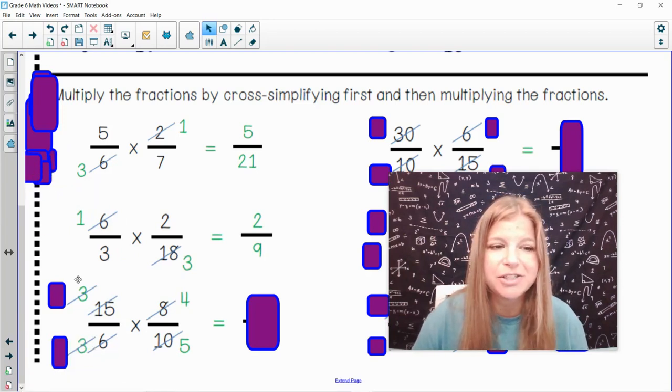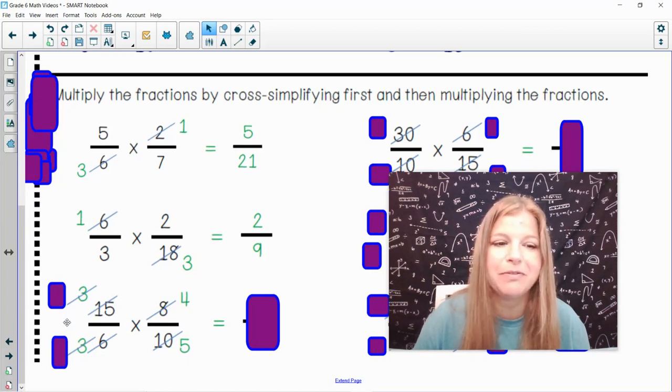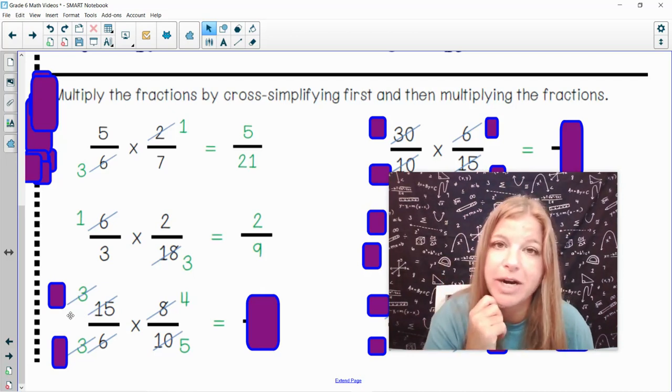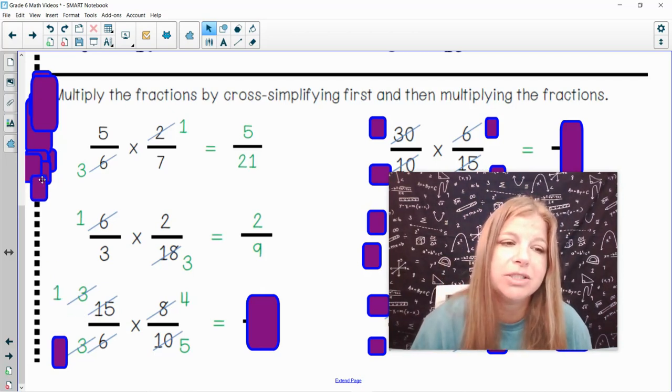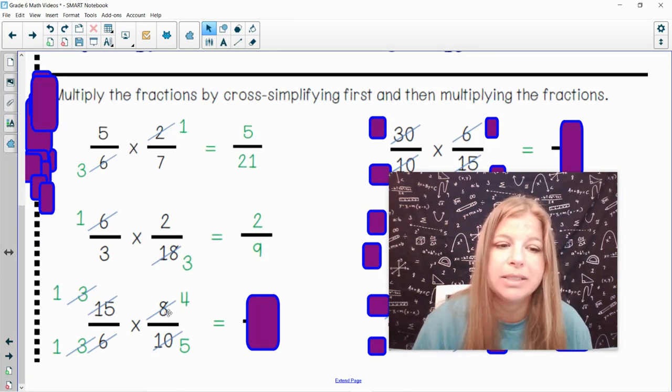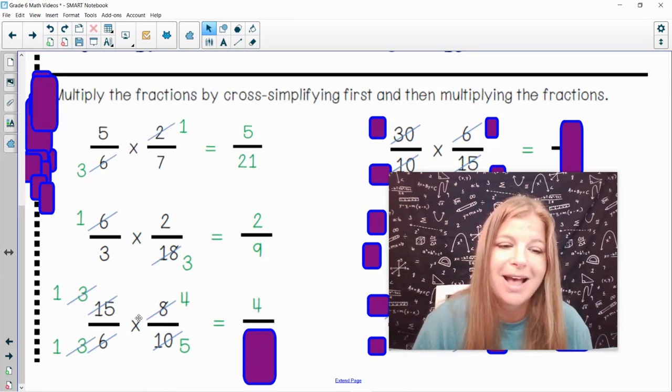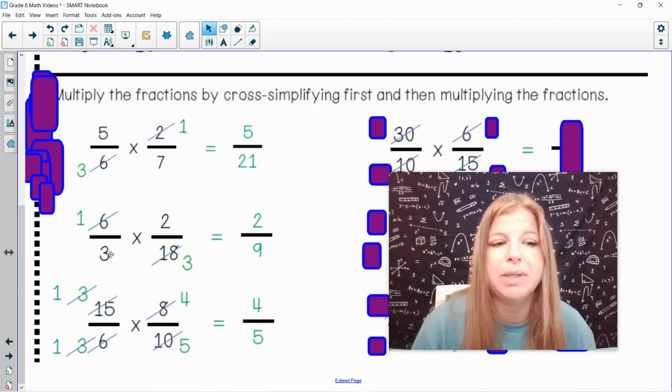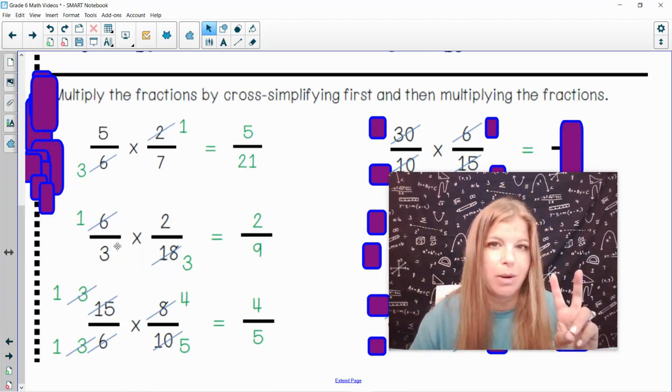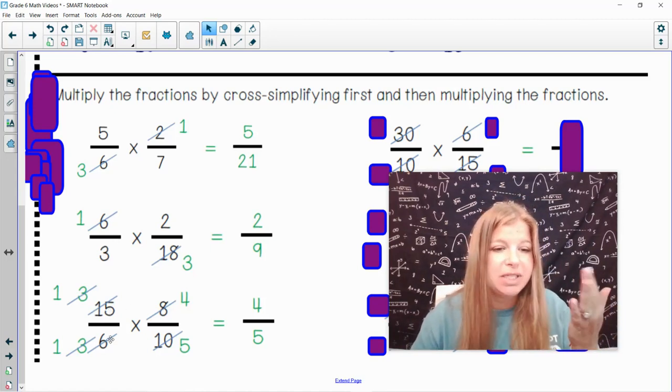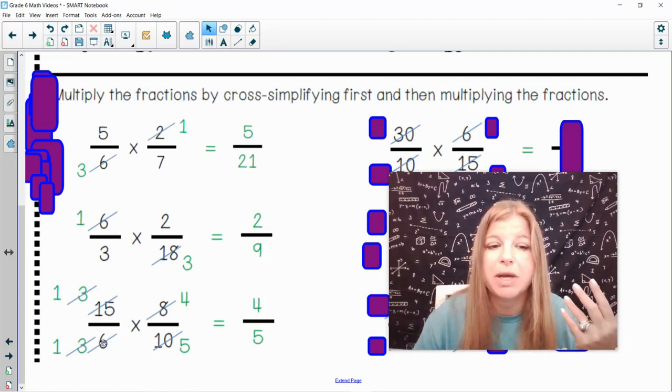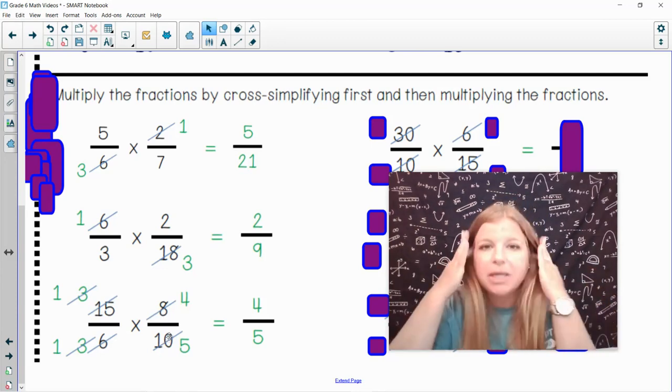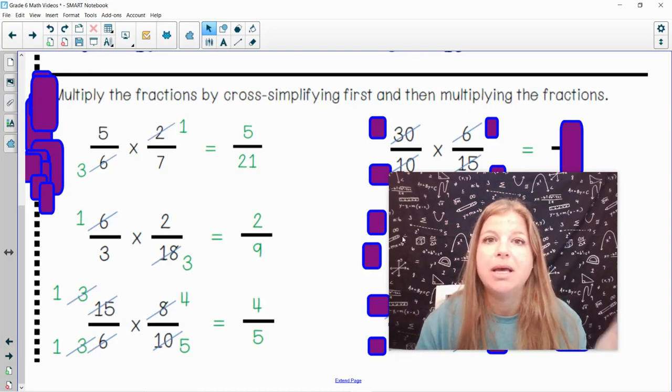Now, what you'll notice here is I actually crossed out the 3's of my simplifying because 3 over 3 in the fraction, don't forget, you can always simplify within the fraction itself. 3 over 3 is just 1 over 1. And so I'm left with 1 times 4 is 4 and 1 times 5 is 5. Now, if you were to say what about the previous problem? Isn't 6 over 3 just 2 over 1? Yes, you could do that too. Isn't 15 over 6, could I divide both of those by 3? Or 8 over 10 divide both of those by 2? Absolutely. There's so many different ways to do this strategy in different orders.